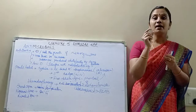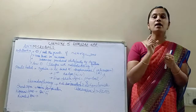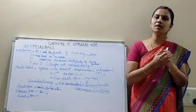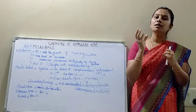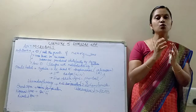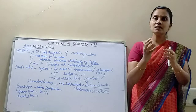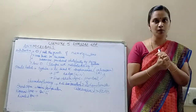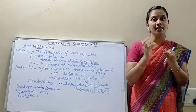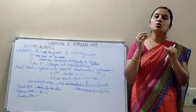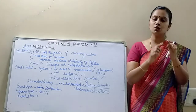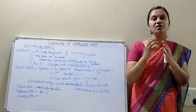Drugs can act as enzyme inhibitors in two ways. First, the drug competes with the substrate for the active site of the enzyme — these are called competitive inhibitors. Instead of the substrate, the drug binds to the enzyme, so no chemical reaction proceeds. Second, the drug binds to the allosteric site, a site other than the active site. This modifies the enzyme structure so the substrate cannot recognize it, and no chemical reaction proceeds.